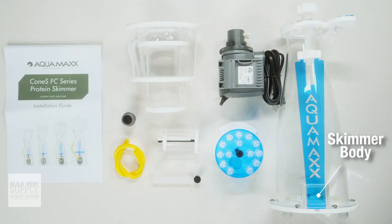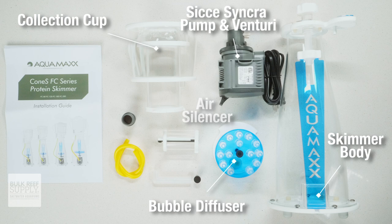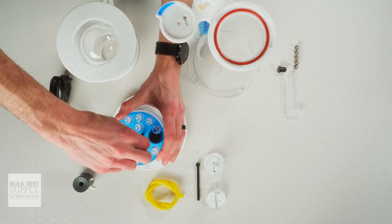When you lay everything out, you'll have your skimmer body, a collection cup, a Sice Asyncra pump and Venturi, a bubble diffuser, an air silencer, some tubing, as well as the installation guide. And it's all really easy to put together.